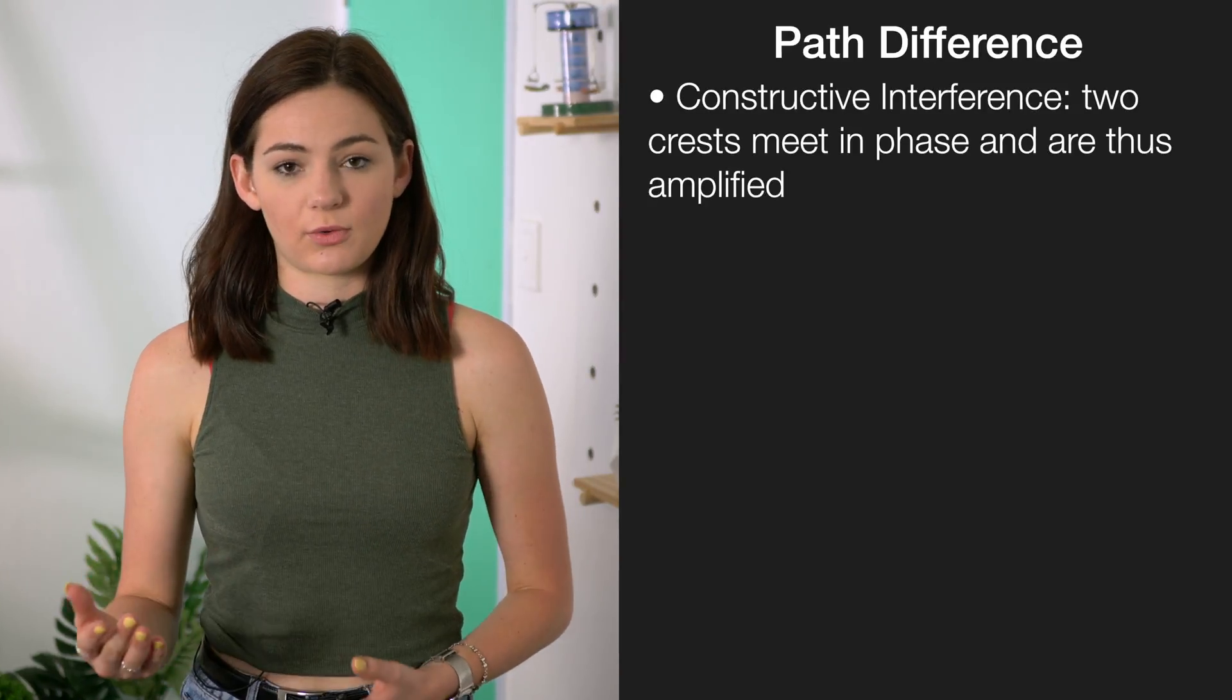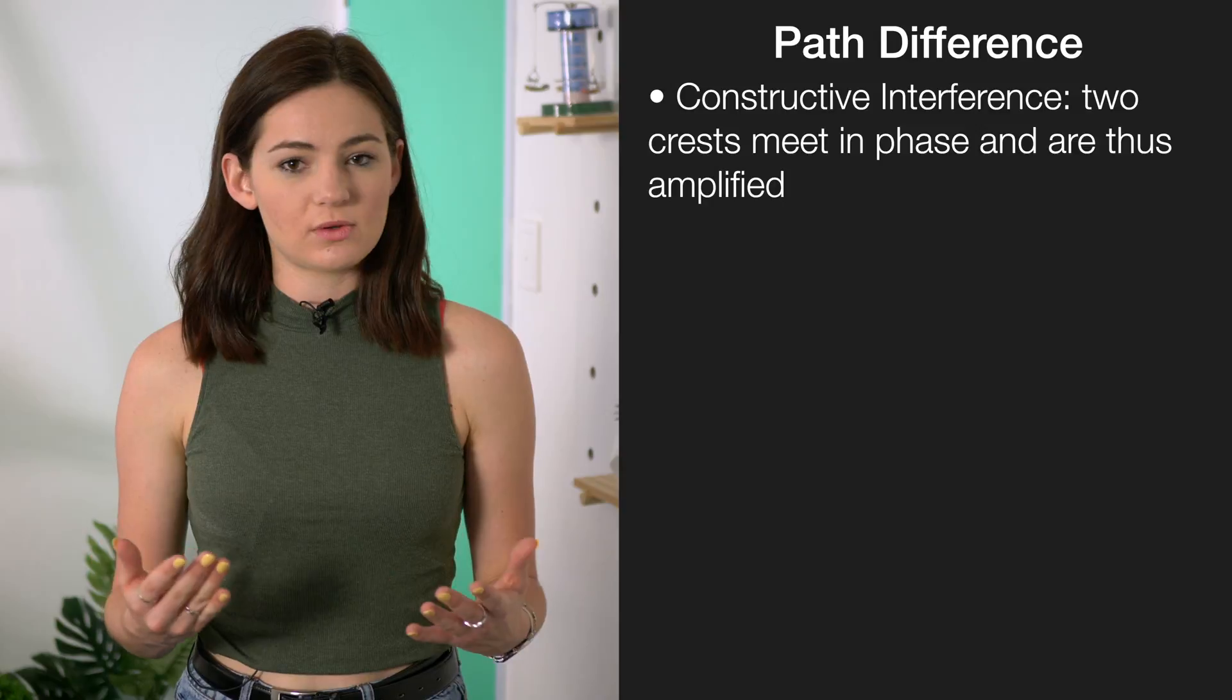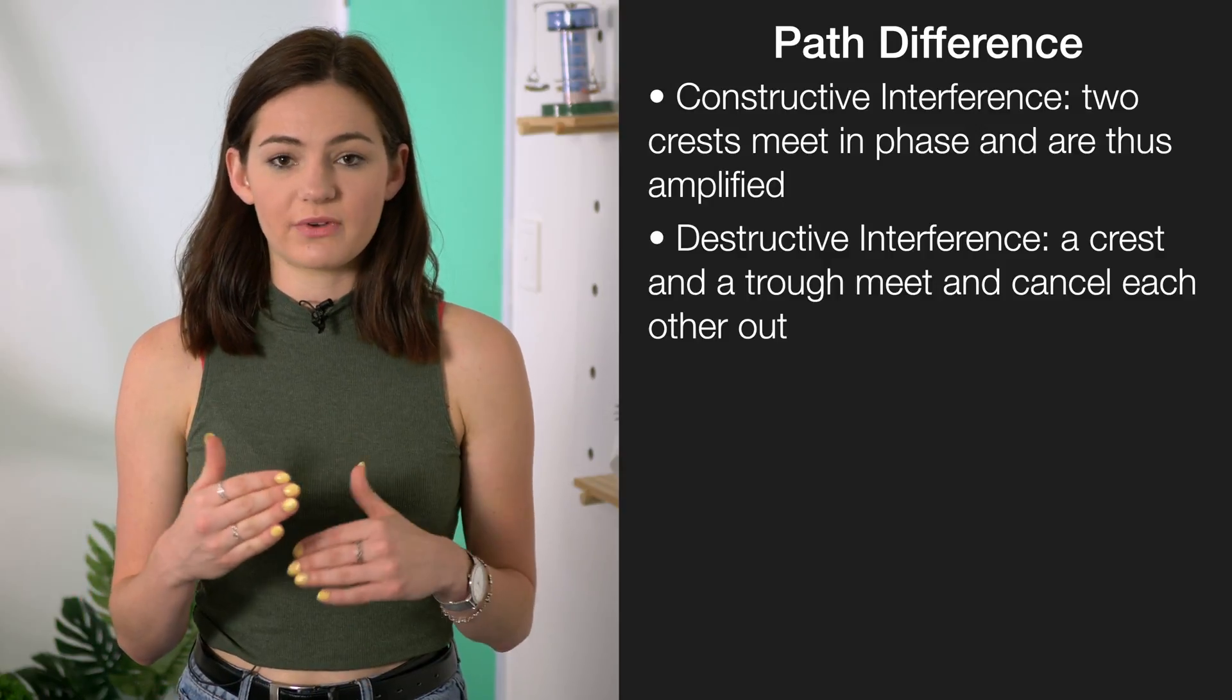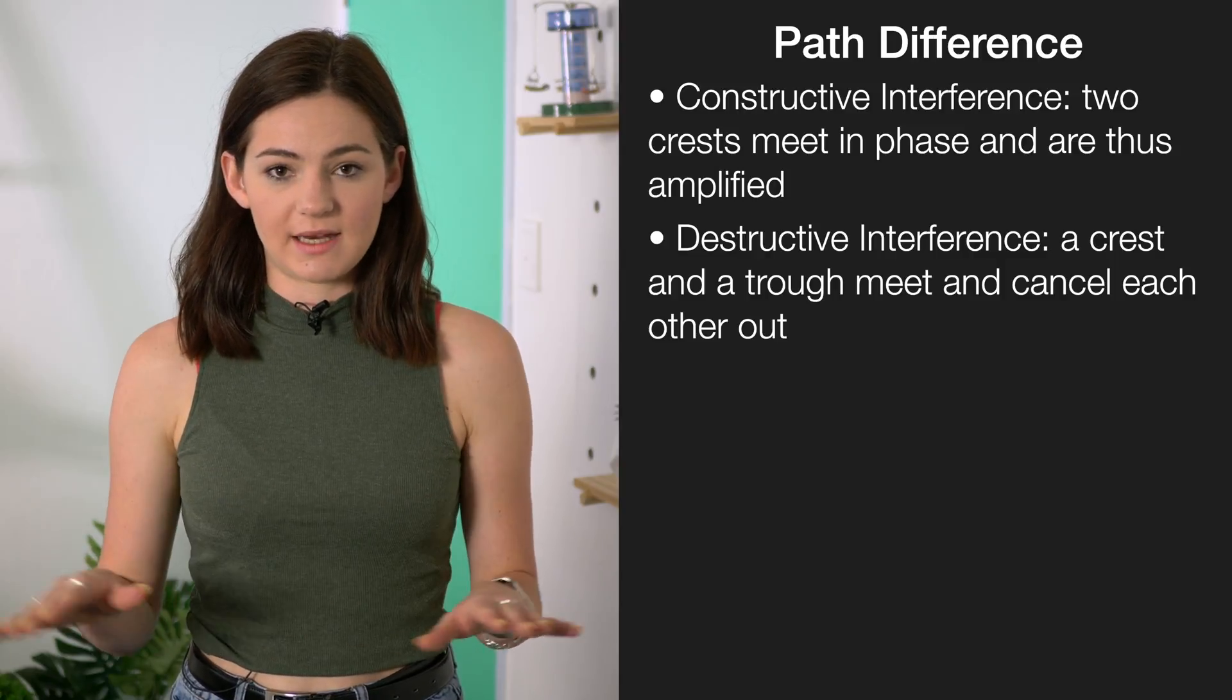A common question you'll get is on path difference. There are two types: constructive interference and destructive interference. Constructive interference is where a crest meets a crest, and the sound or light is amplified. Destructive interference is where a crest and a trough meet, and all sound and light are eliminated.